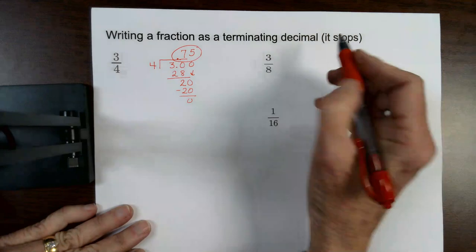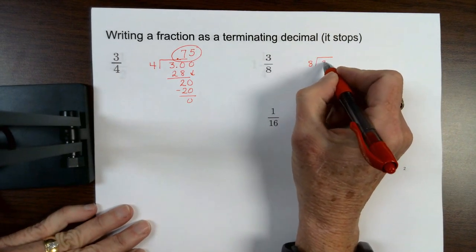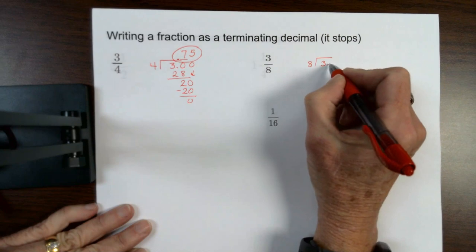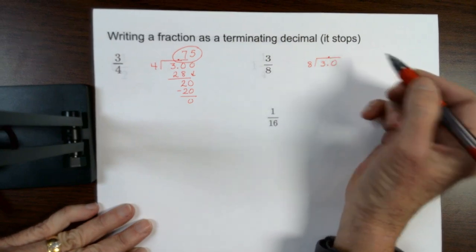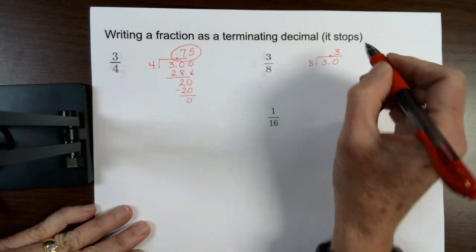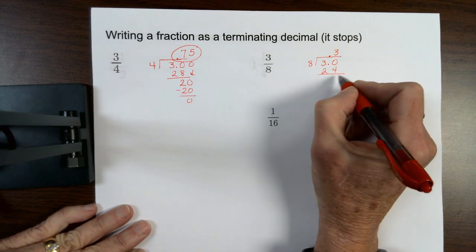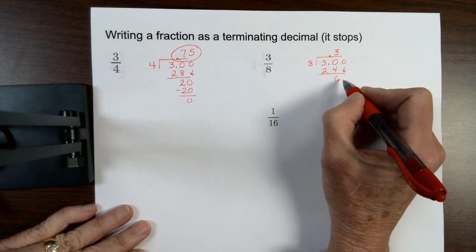If I do 3 eighths, again, I'm going to divide 8 into 3, the bottom into the top. I'm going to add a decimal and a 0. I bring the decimal straight up. 8 goes into 30, 3 times. 3 times 8 is 24. I'm going to subtract.